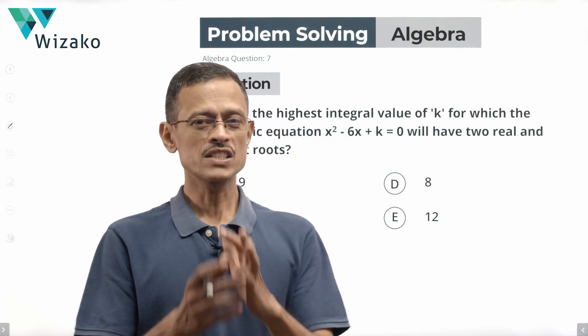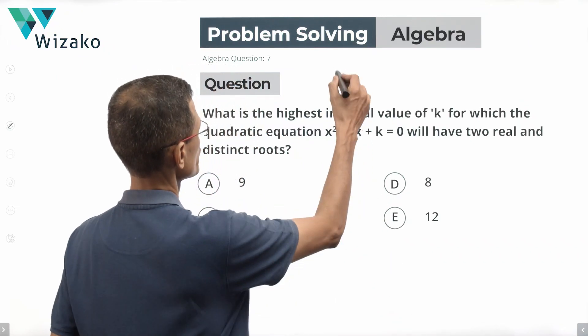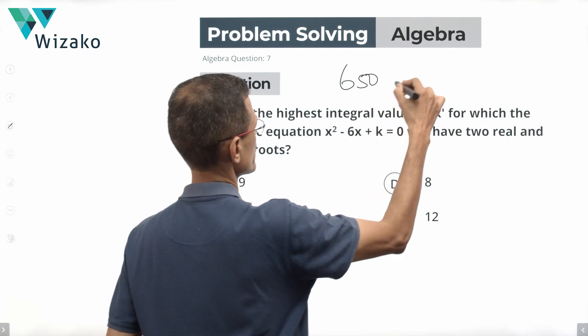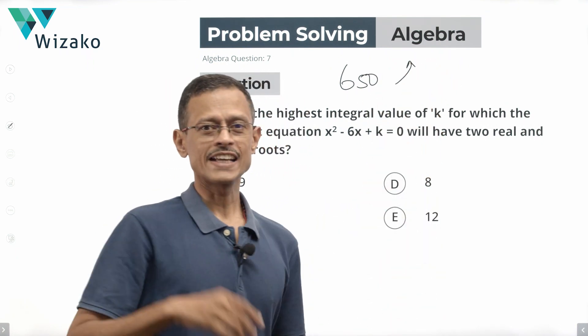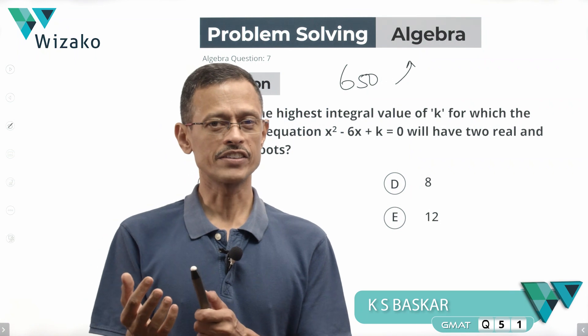It's actually an easy question. I'm classifying it as a GMAT 650 level problem-solving question in algebra, essentially quadratic algebra, because it expects you to know the nature of the roots of a quadratic equation.